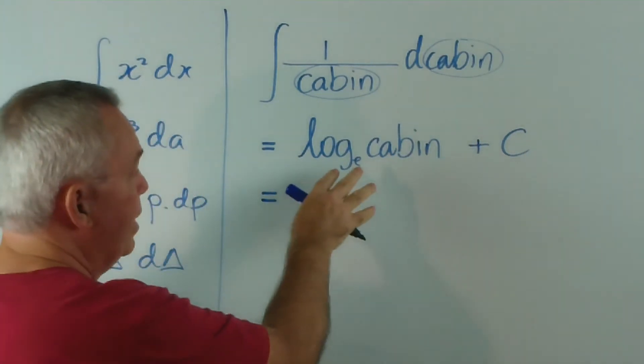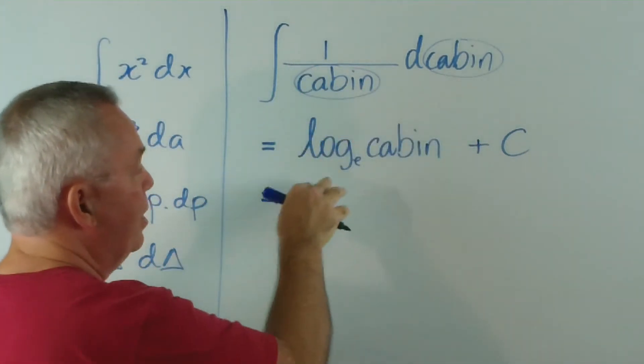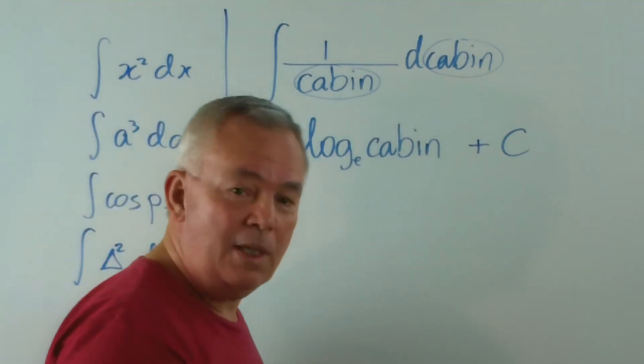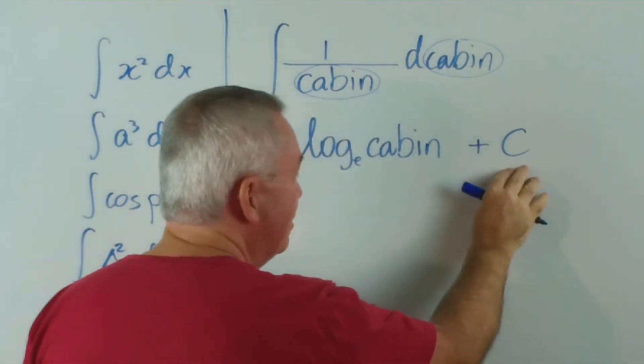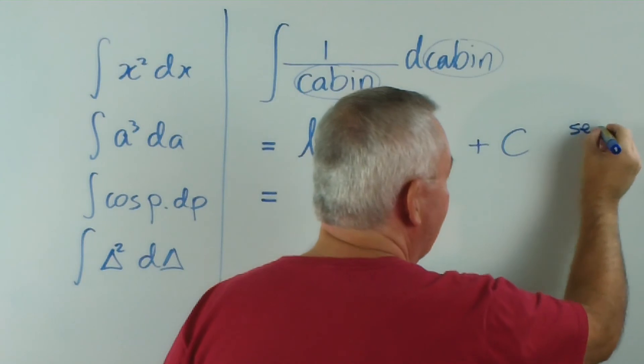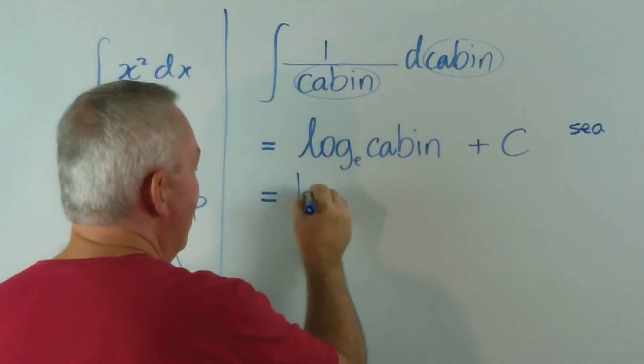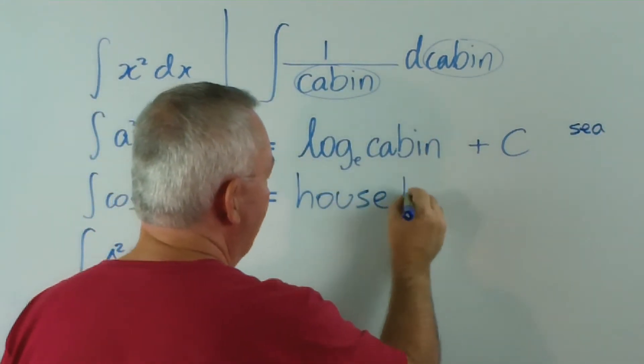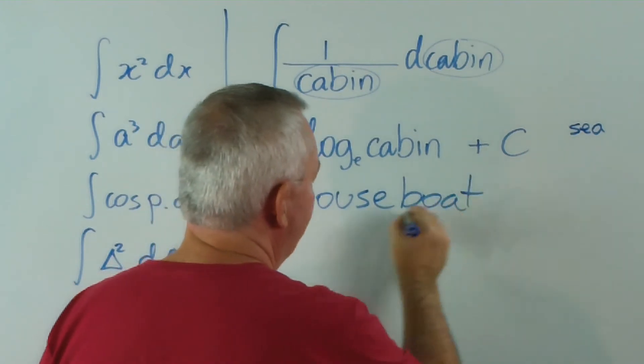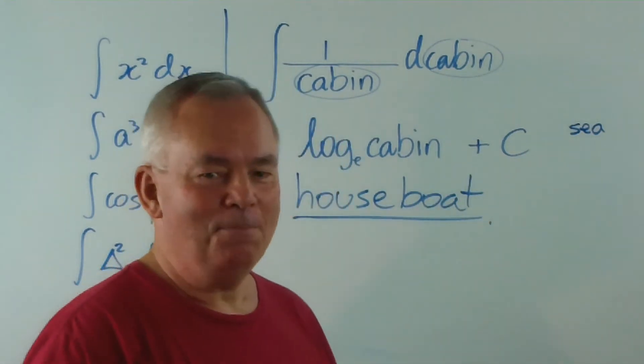I don't know who invented this. But what we have... this is the correct answer. The integral of 1 over cabin D cabin is log cabin plus C. And the log cabin plus C is a houseboat. Dear, oh, dear...